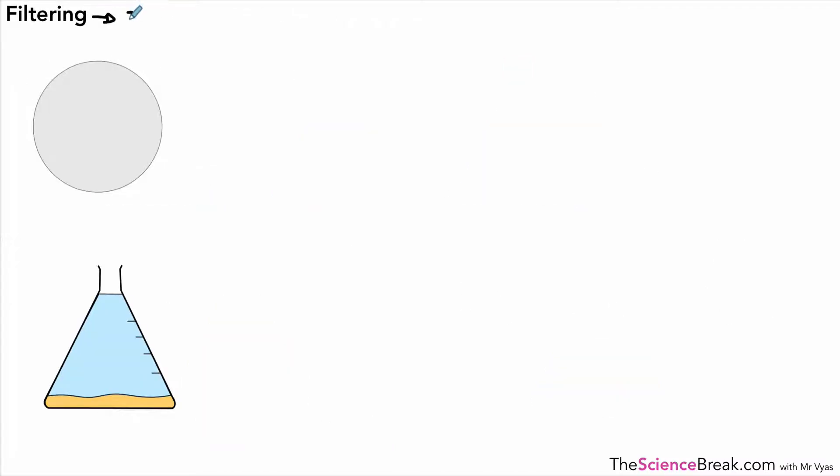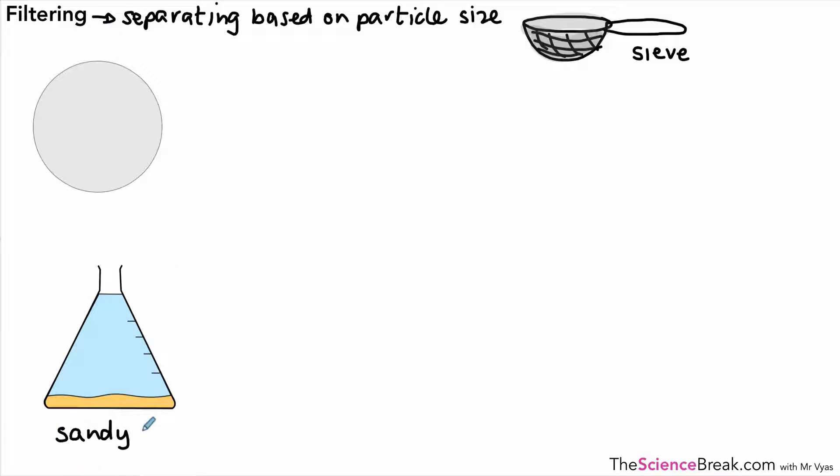This one is called filtering, and the basic idea of filtering is separating out substances based on particle size. If you've got different sized particles in a mixture, whether it's sand in water, or maybe something you could do at home in the kitchen with a sieve, you can separate out the different parts based on how big they are. In terms of our sand and water, we're going to call this sandy water. Sand, as we know, is insoluble.